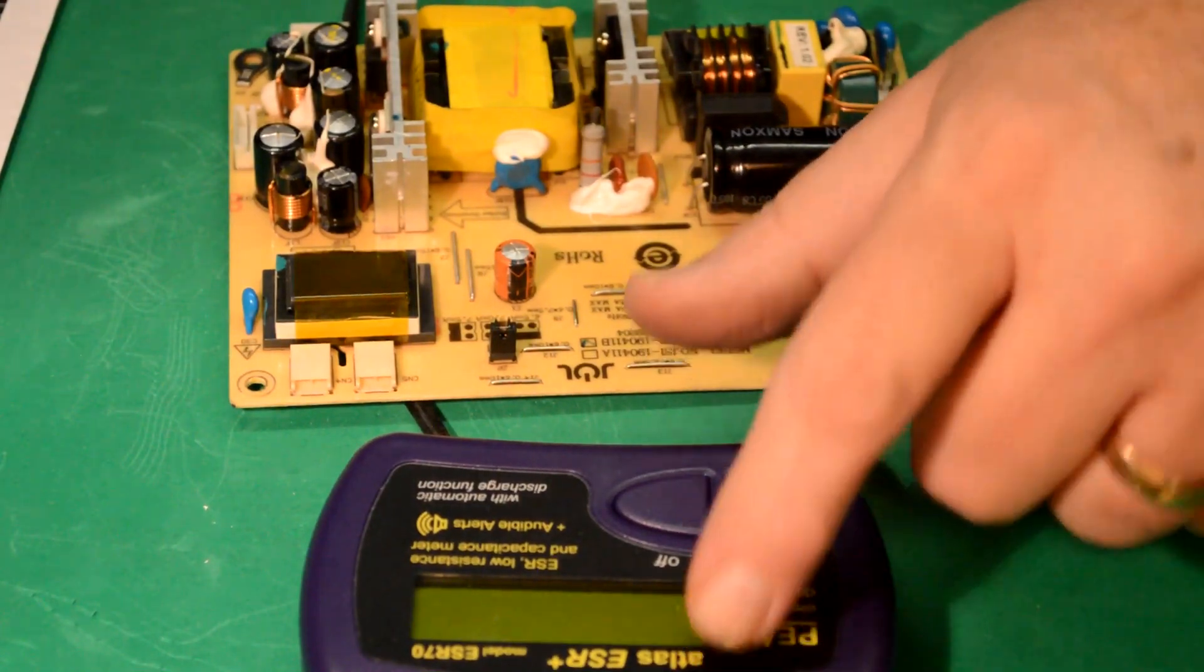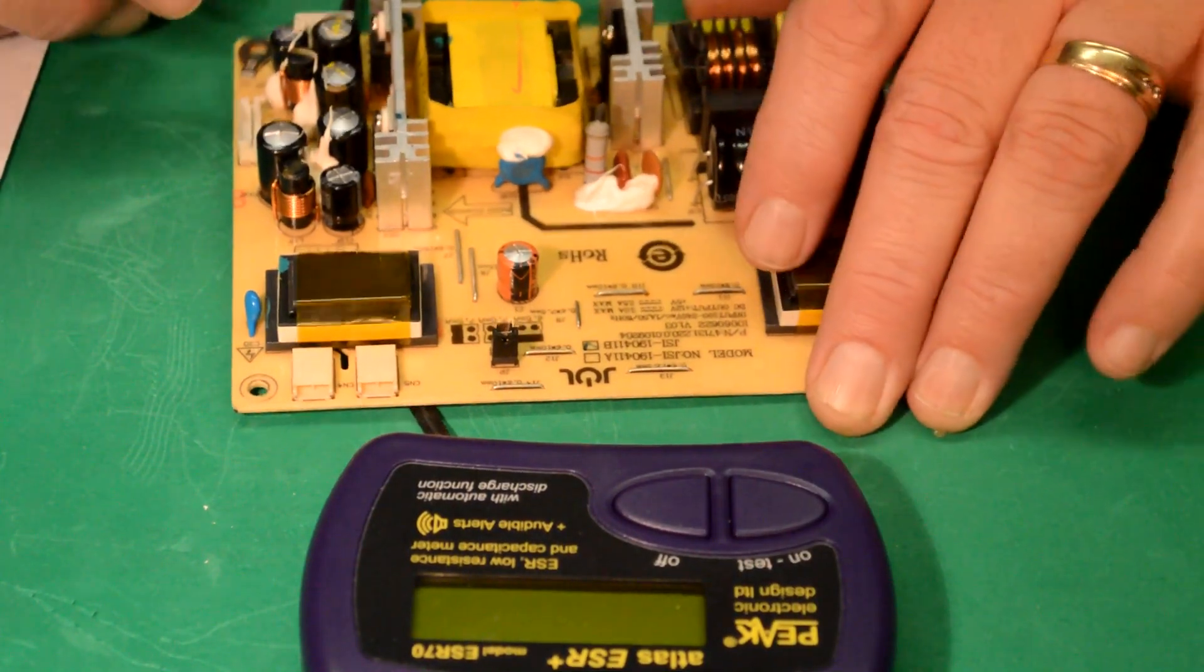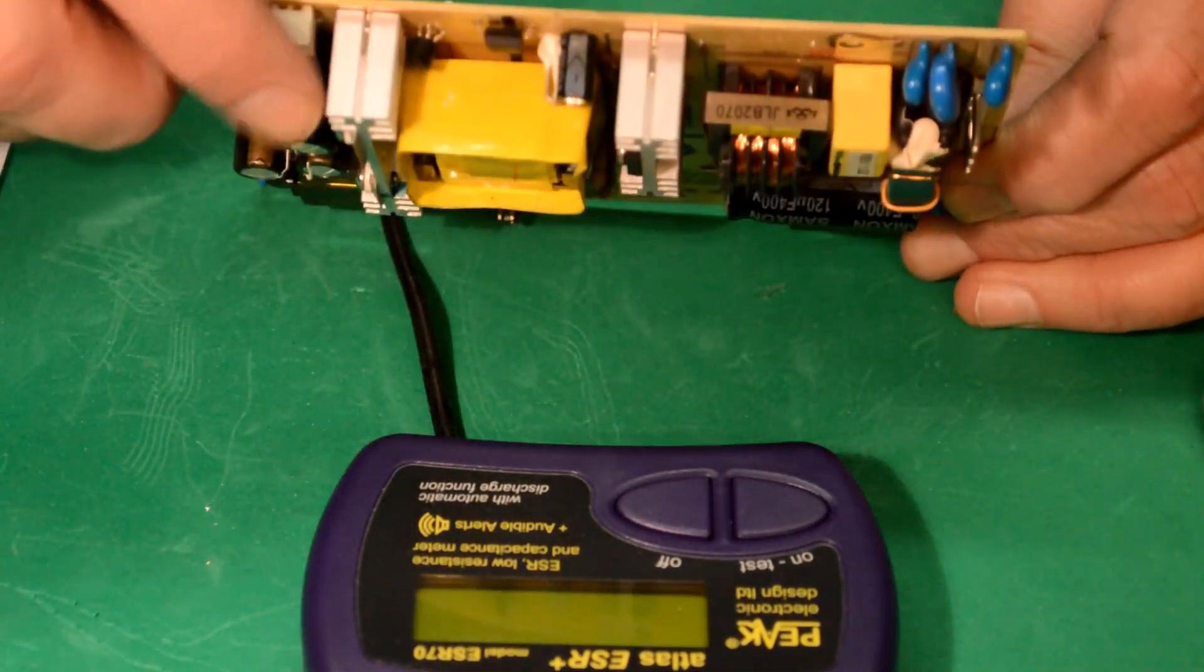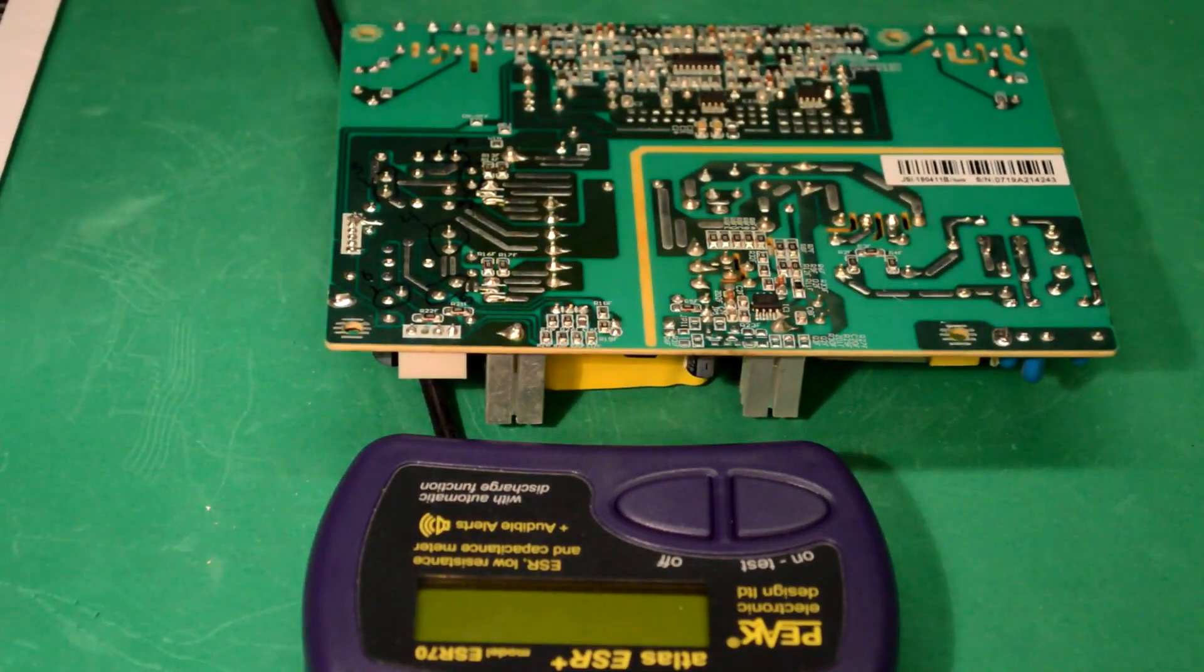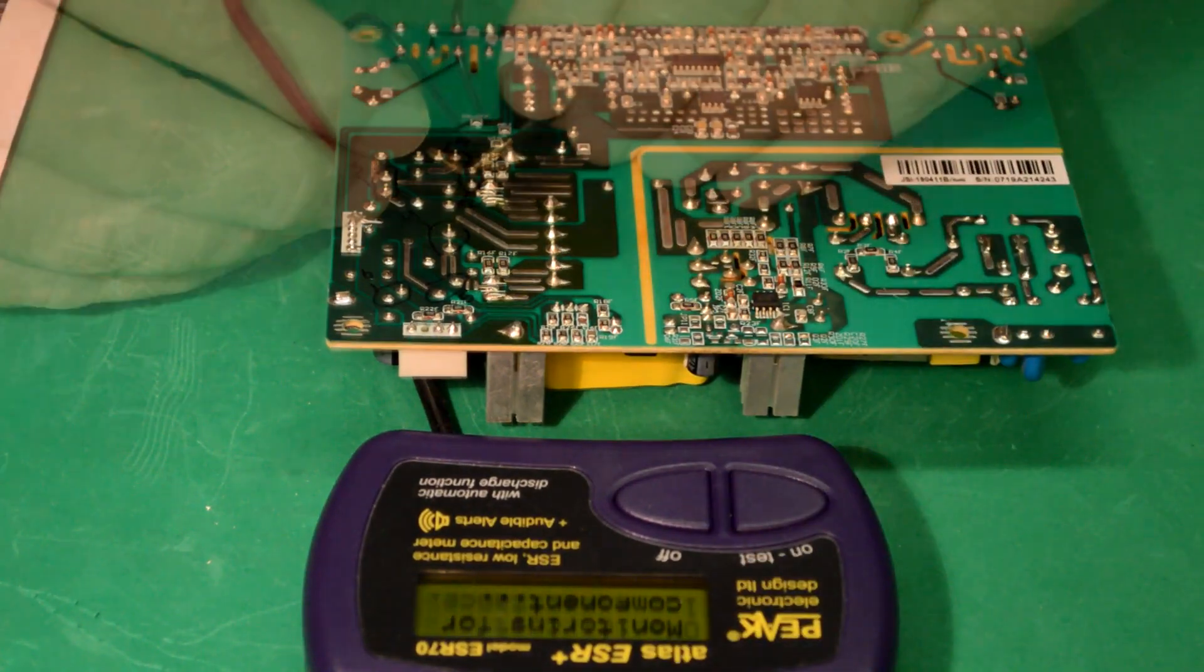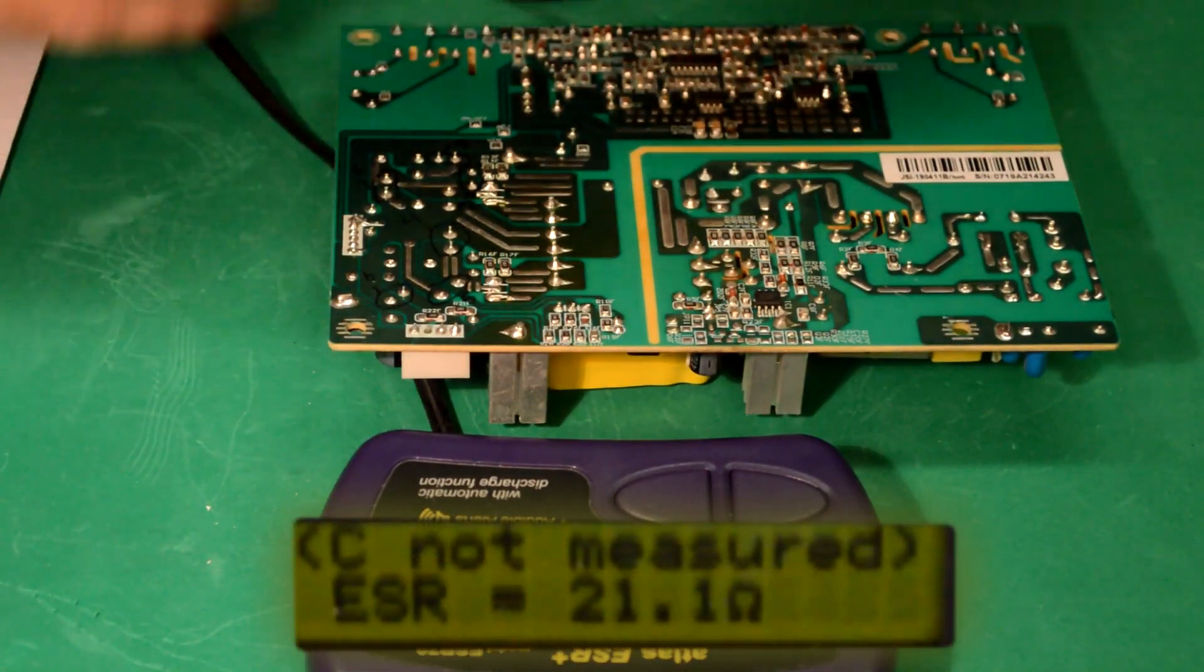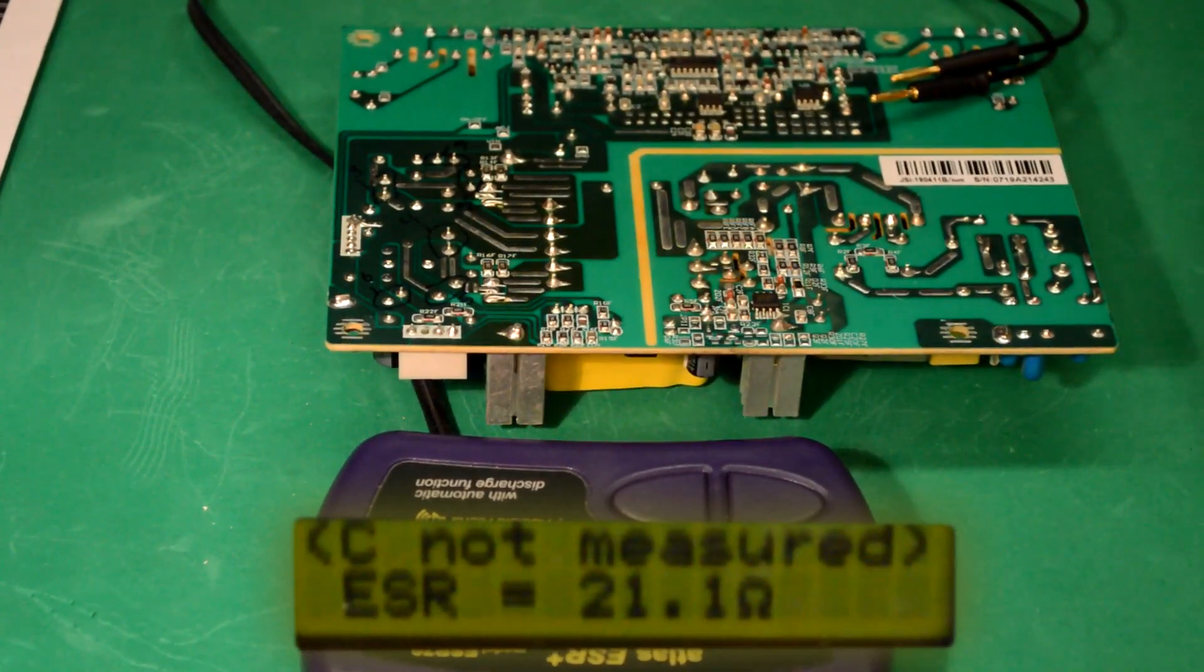So let's use our ESR meter here and check a couple of these caps. Let's go ahead and check this one that's bulging a little bit. I've got it marked out here on the back, and that is a 470 microfarad at 25 volts. It's saying that our ESR is 21 ohms, which is way too high.